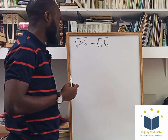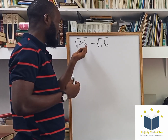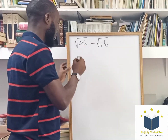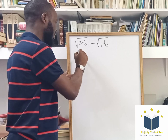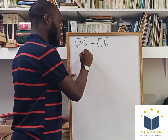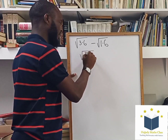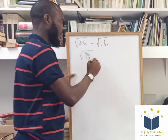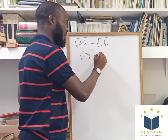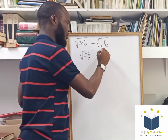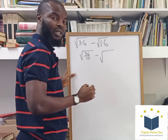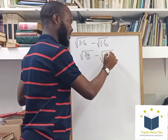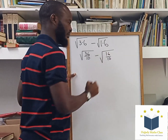Simplifying this, I'm going to rewrite 3.6 in fraction form. We know that 3.6 is the same thing as writing 36 over 10, minus root 1.6, which is the same thing as writing 16 over 10.